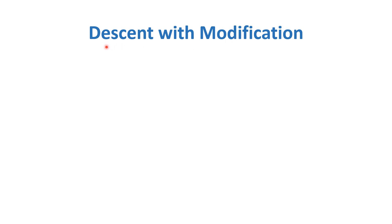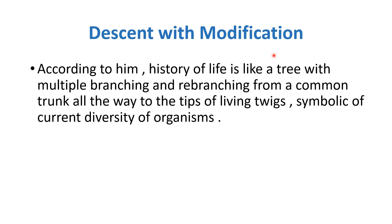Let's discuss the first point, which is descent with modification. When one organism reproduces, there are some modifications in its offspring. According to Darwin, the history of life is like a tree, with multiple branching and rebranching from a common trunk all the way to the tips of living twigs, symbolic of the current diversity of organisms. The ancestry is common — a common trunk from which all different branches originate.